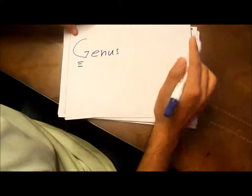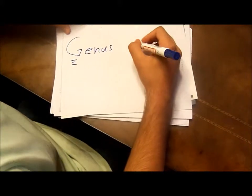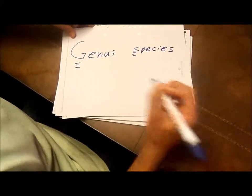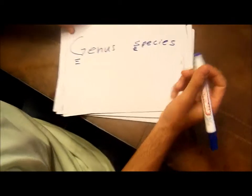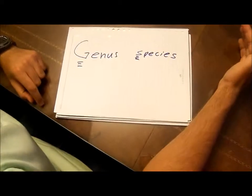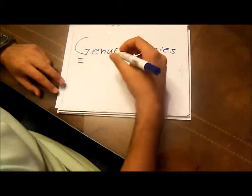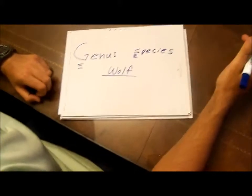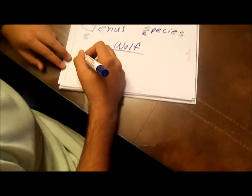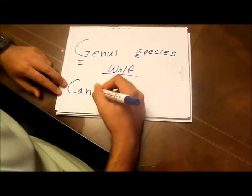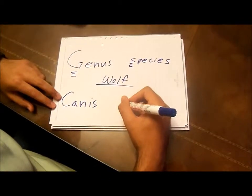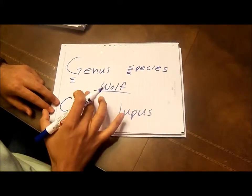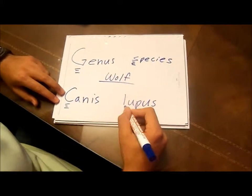The genus, whose first letter is capitalized, and species, in which the first letter is lowercase. A quick example: when we're talking about the wolf, the official name the binomial system gives to it is Canis lupus. This is all one name, composed of two parts — the genus and the species.